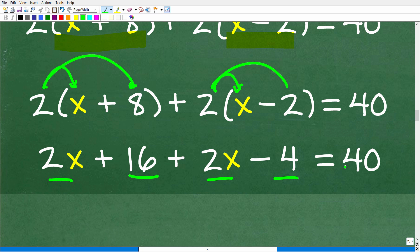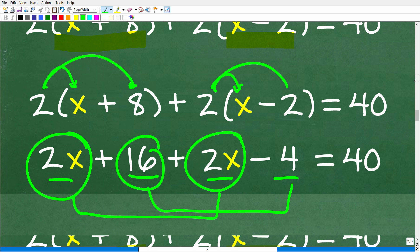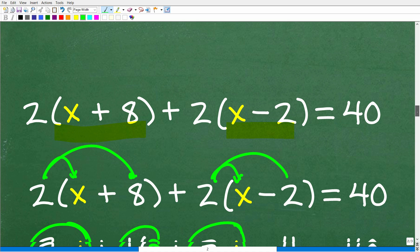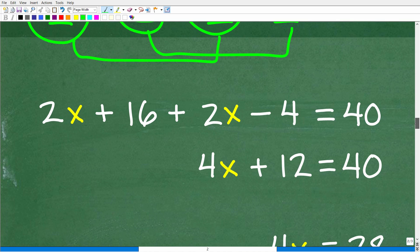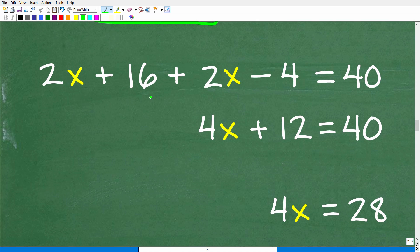All right, so what is the next move? Well, the next move is to combine like terms. So we have these 2x's right here, and then we can combine these numbers right there. We want to clean up the left-hand side of the equation. All right, so let's go ahead and take a look at that right now. All right, so 2x plus 16 plus 2x minus 4 is equal to 2x and 2x is 4x, and 16 minus 4 is 12. So we've got 4x plus 12 is equal to 40.